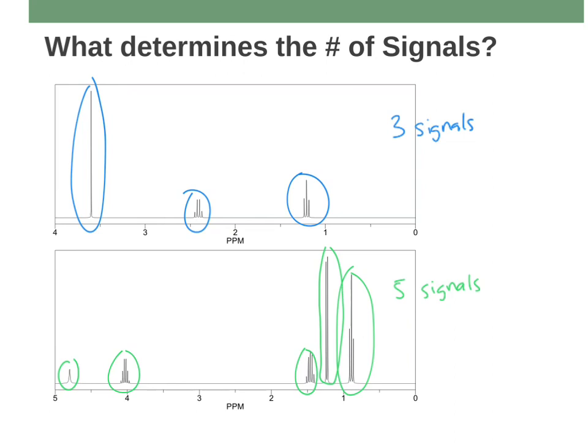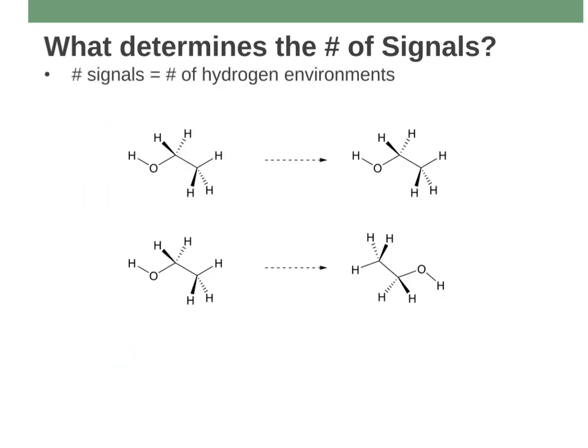So let's talk about this chemical environment. Why might a molecule give three signals versus five signals? The number of signals equals the number of hydrogen environments.